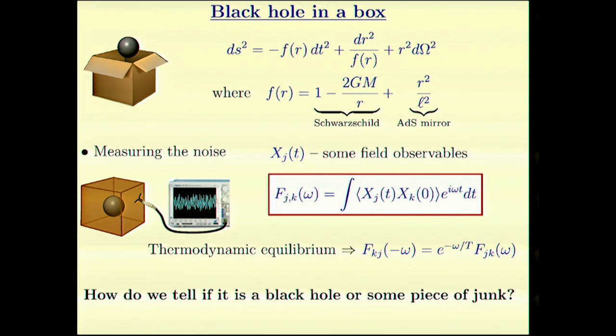We can measure the correlators, and this is a two-point correlator. Of course, it's an equilibrium correlator, so it satisfies some well-known conditions. But the real question is how do we tell whether it's a black hole or some piece of junk? We cannot do that just from the two-point correlator. So let's talk about higher-order correlators.